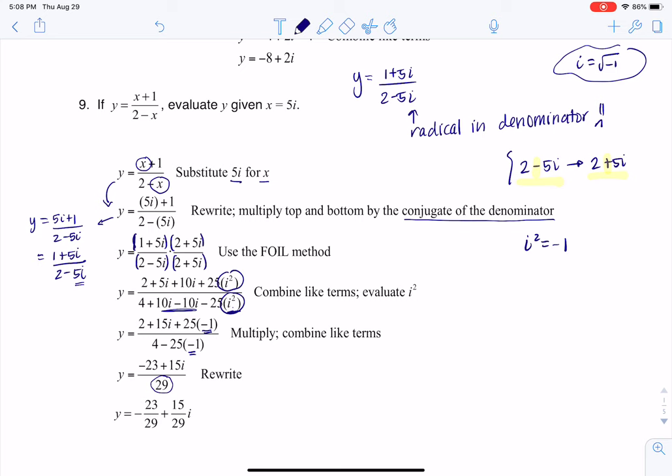And then you can rewrite this so that this fraction is of the form a plus bi, where in this case, a is negative 23 over 29, and b is 15 over 29i. So that's how we can evaluate that expression if we're given x is equal to 5i.